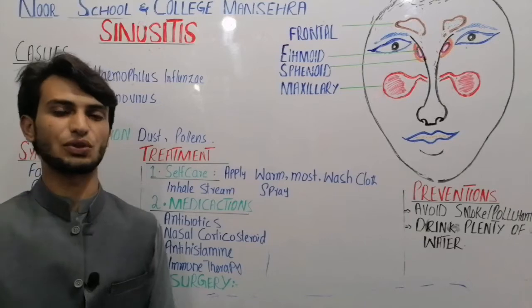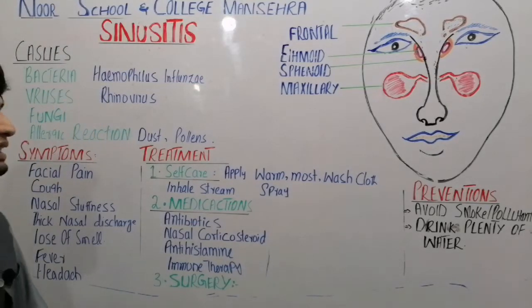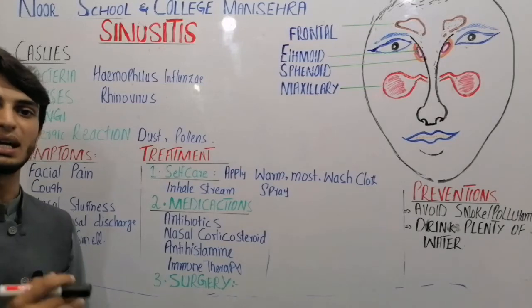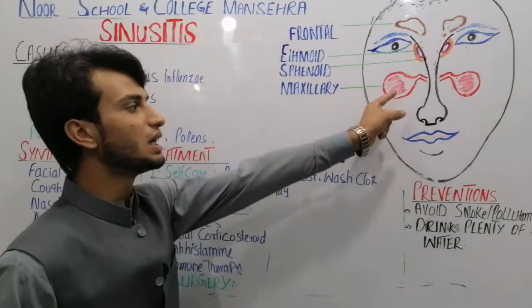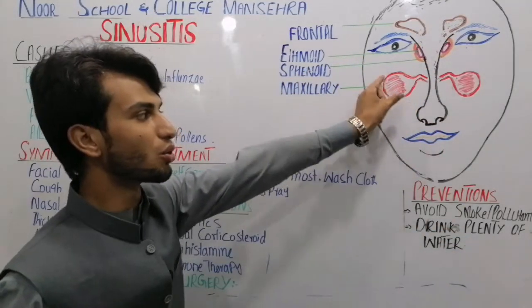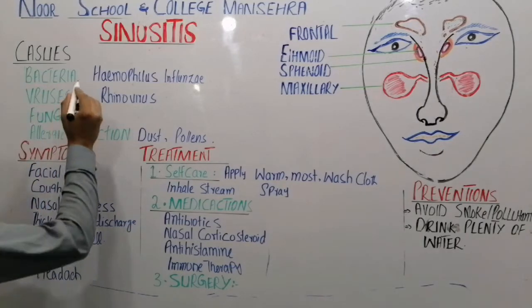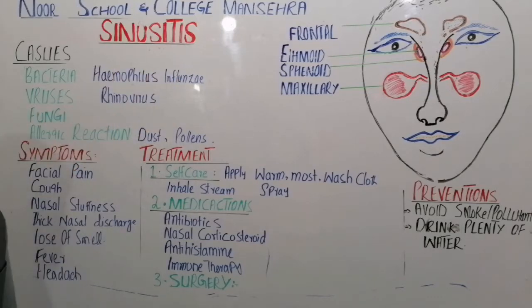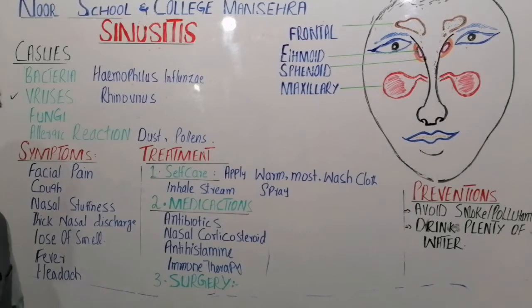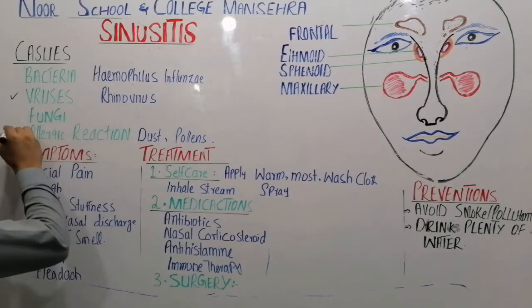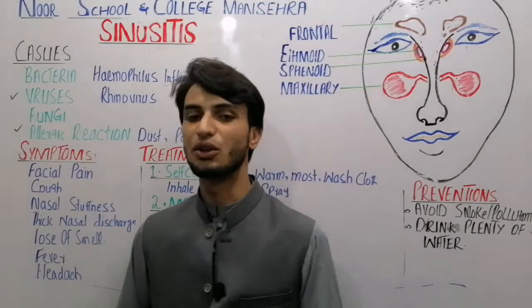Sinusitis کی causes کو discuss کرتے ہیں. Mostly bacteria اور viruses sinusitis کو cause کرتے ہیں. جیسے ہی sinus block ہوئی اور mucus وہاں اکٹھا ہوا، یہ bacteria اور viruses کی growth کروائے گا اور infection cause کرے گا. سب سے زیادہ bacteria ہے — for example Haemophilus influenzae. Viruses میں rhinoviruses mostly sinusitis infection cause کرتے ہیں. اس کے بعد fungi بھی ہے اور allergic reactions جیسے dust اور pollen کی وجہ سے بھی sinusitis cause ہو سکتا ہے.